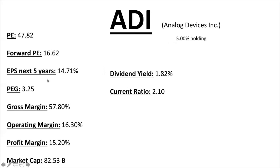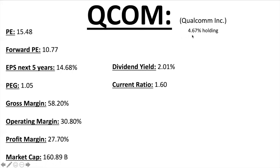Analog Devices Incorporated has about a 5% holding in the ETF. A little overvalued now with PE of 47.82, Forward PE 16.62, EPS next five years under 15% — giving it a higher PEG ratio since the PE is high and EPS isn't as significant. Maybe it'll beat these numbers. Gross margin is good but operating margin and profit margin are under that 20-25% mark, though there's room to grow. Market cap $82.53 billion, dividend almost 2%, current ratio 2.1.